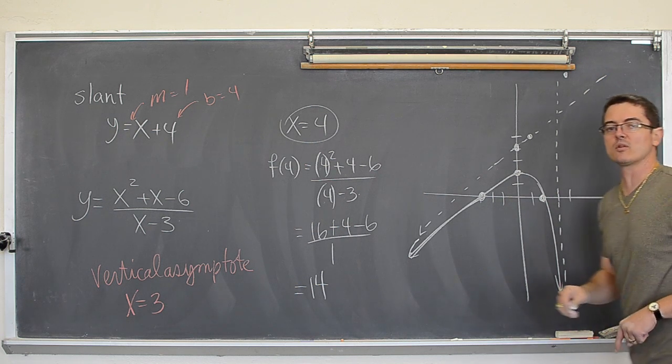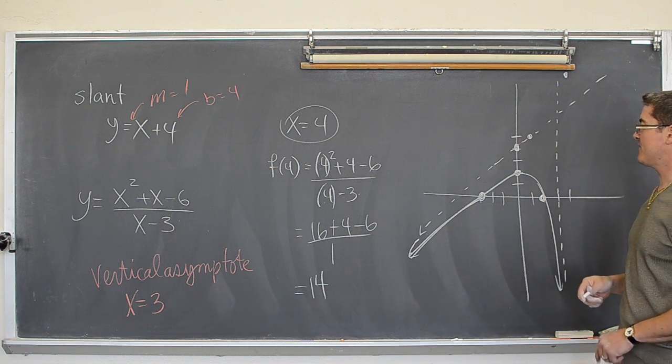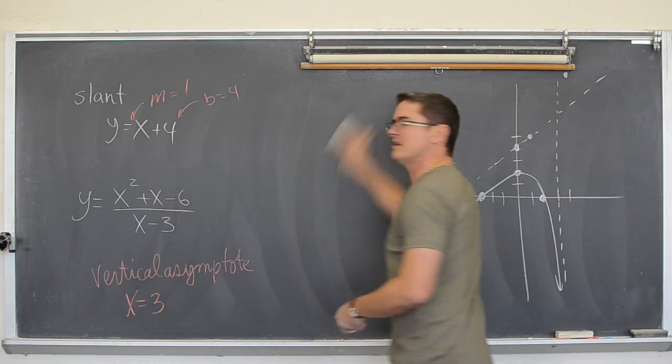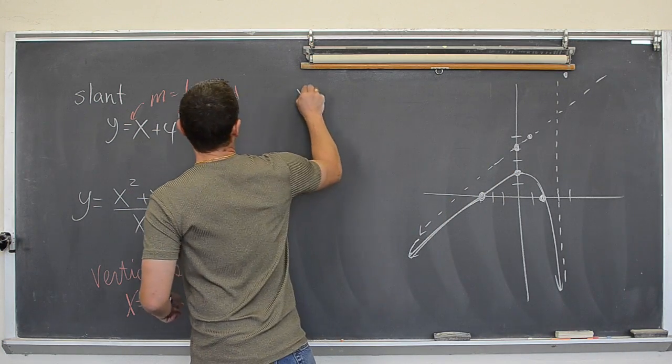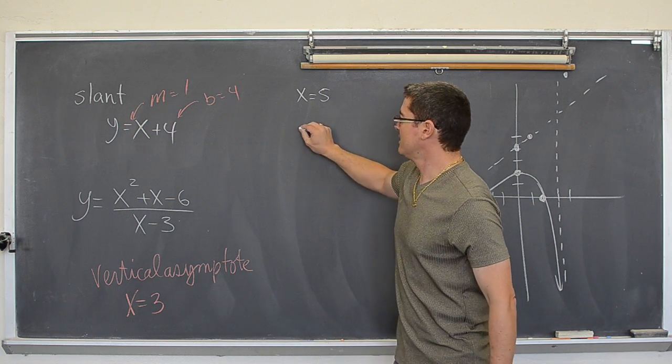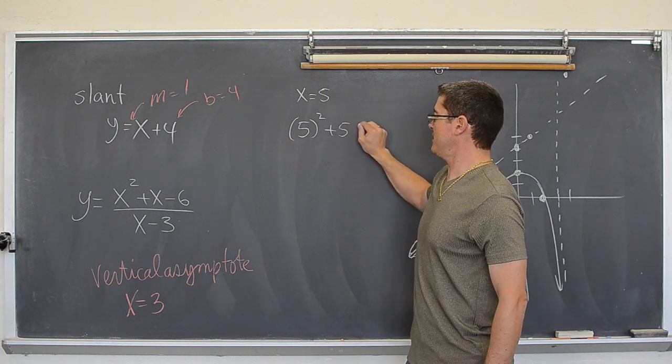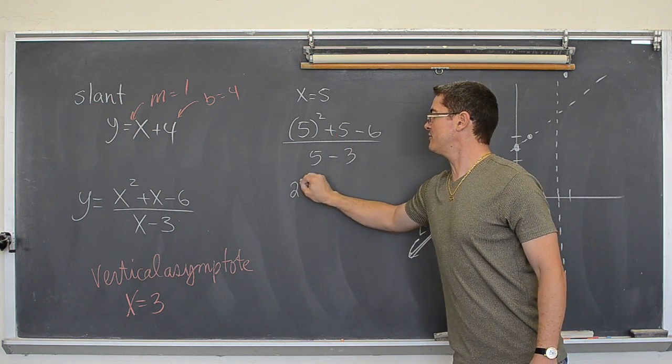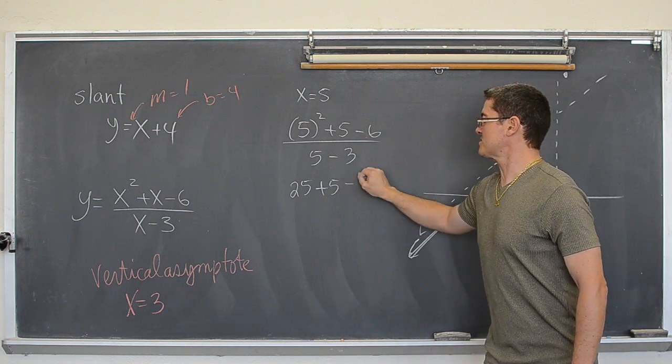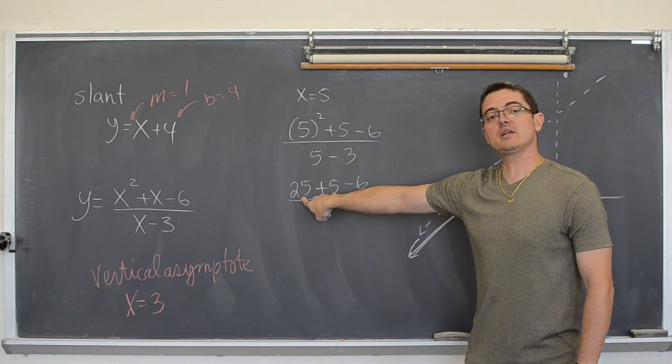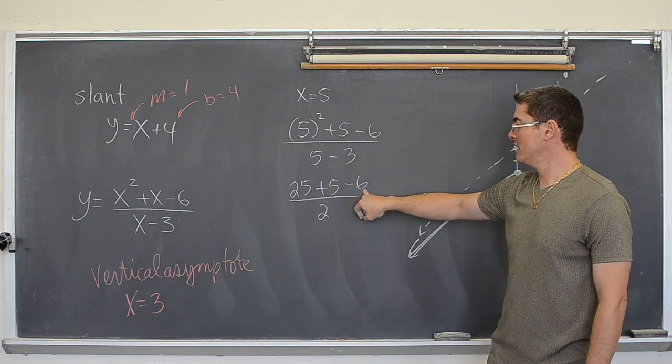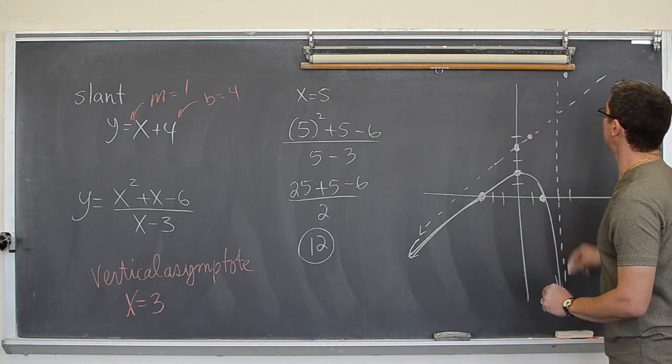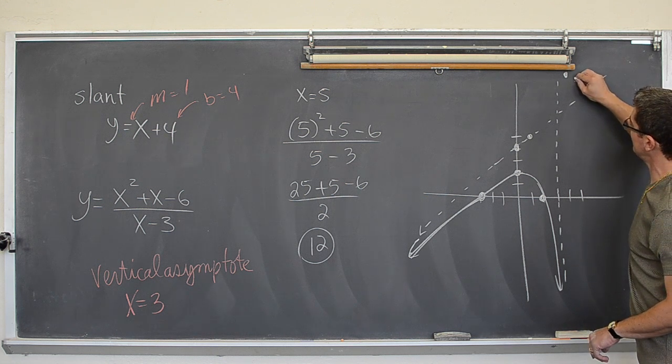Now, you really should have more than one point to make a graph. So, let's try 5 and hopefully the numbers aren't too ridiculously big. And that should be enough to let us see what is going to happen. So, at x equals 5, we get 5 squared plus 5 minus 6 over 5 minus 3. That is 25 plus 5 minus 6 over 2. That is 30. Now, it is 24. And 24 divided by 2 is 12. So, there is a little bit of a drop. So, at x equals 5, there is a little bit of a drop.